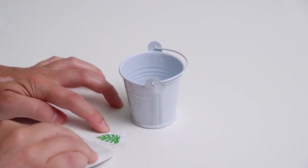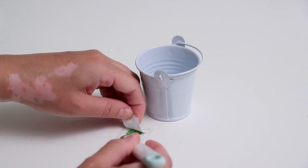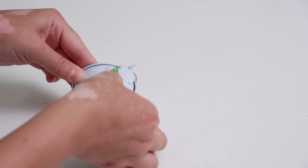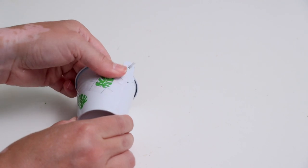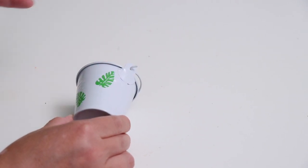And then peeled that transfer tape away and now my design is stuck to the little bucket. So I did each pail with a different design - one of them I did all leaves and then one of them I did all of the watermelon. And I just wanted to let you know a little tip for pulling the transfer tape away with the vinyl on it.